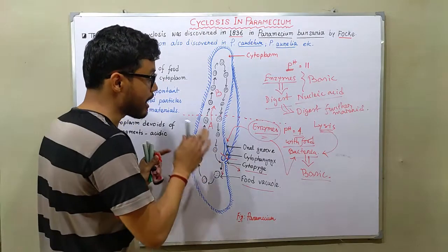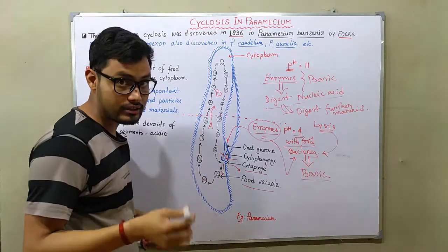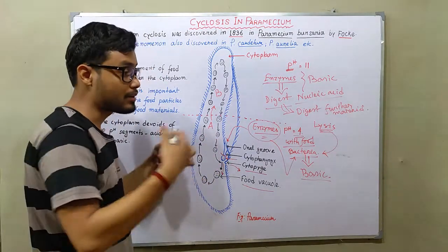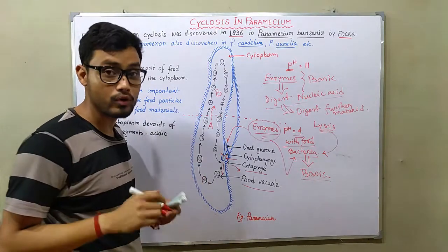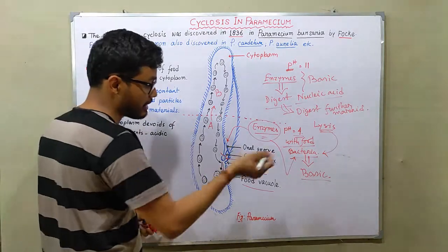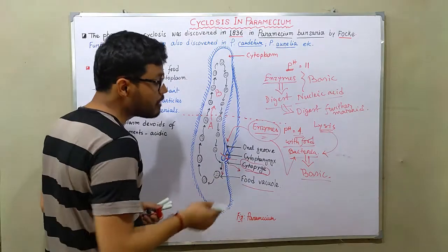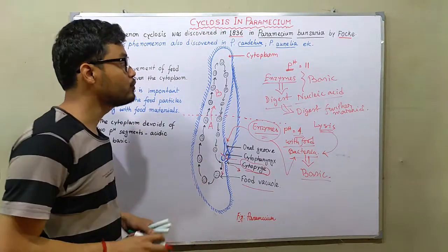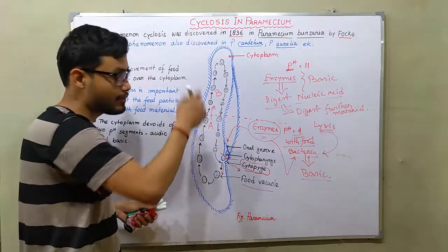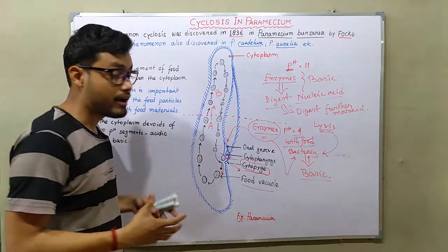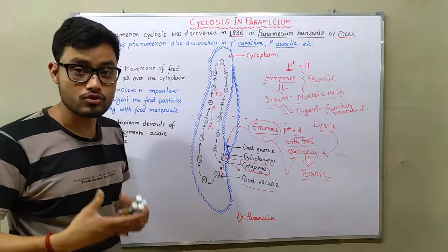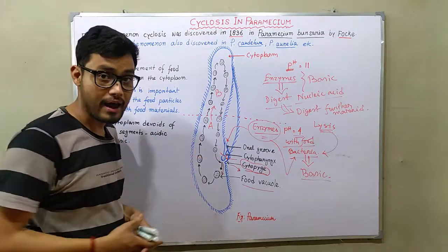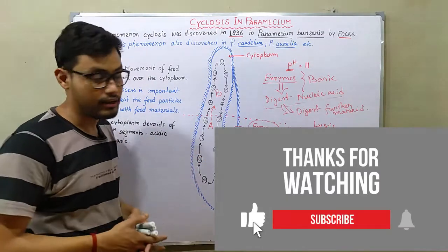And after that the residual body, that is the remaining substances that are not possible to digest, those substances are eliminated out from the paramecium. And I hope this helps you to understand the mechanism of cyclosis and why maintaining acidic pH is so much important in case of paramecium to digest their food.